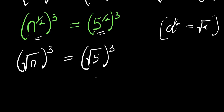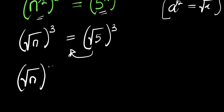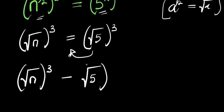So what we are going to do is move this over here and equate everything to zero. We get square root of n raised to the power of 3, minus square root of 5 raised to the power of 3, equals zero.